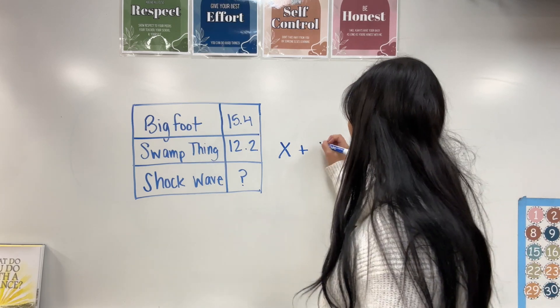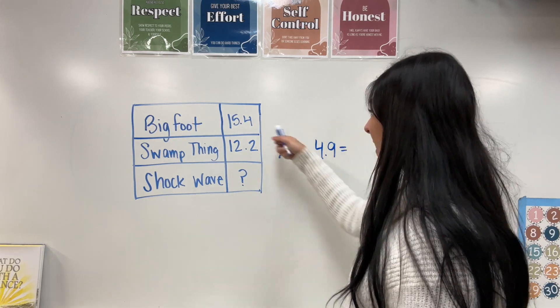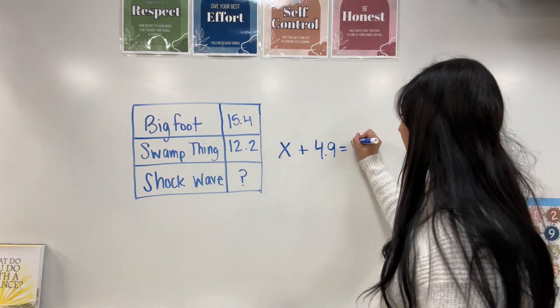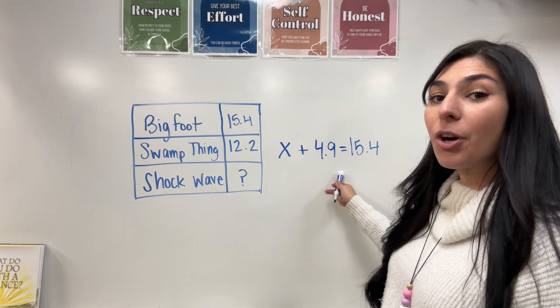It also stated that Bigfoot was 4.9 feet bigger than shockwave. So I'm going to add 4.9 feet. And that should equal the original height of Bigfoot, 15.4. So this is our addition equation.